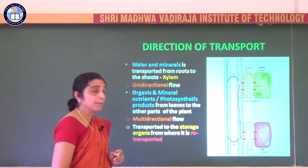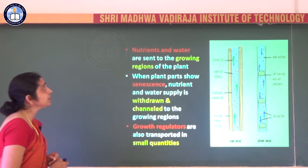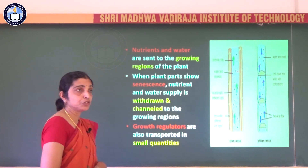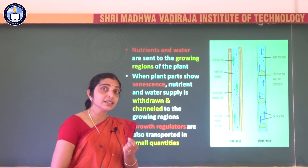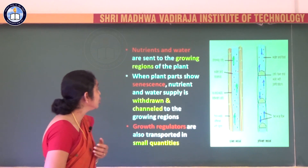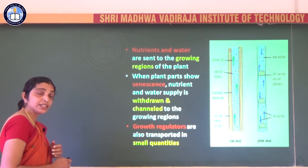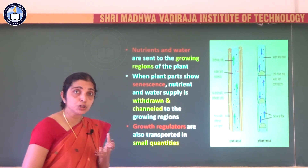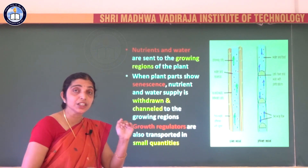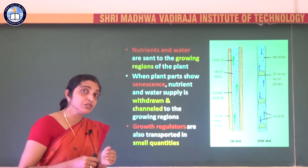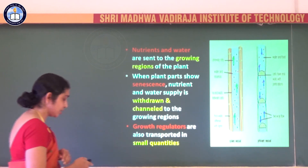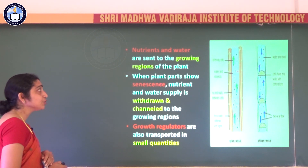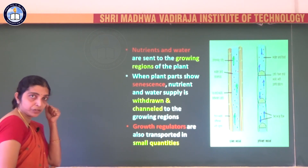The photosynthetic product synthesized in the leaves gets transported and stored in storage organs, and from the storage organs it is redistributed to different parts of the plant. The nutrients and water are sent to the growing regions — the meristematic regions, young leaves, and buds. Whatever water and nutrients are available will start moving toward the young, growing parts.